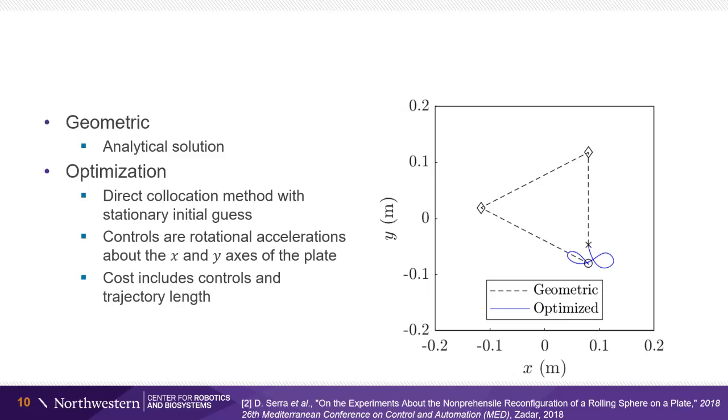The geometric method has an analytical solution and is shown by the dotted black line to the right. We use an optimization method to plan the rolling trajectory shown in blue.